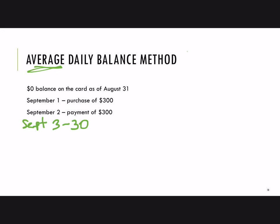So to average the daily balance, we need to add up all of the daily balances in September and then divide. We're going to add up all the daily balances for each of the 30 different days, and then divide by how many days there are — in this case, 30.